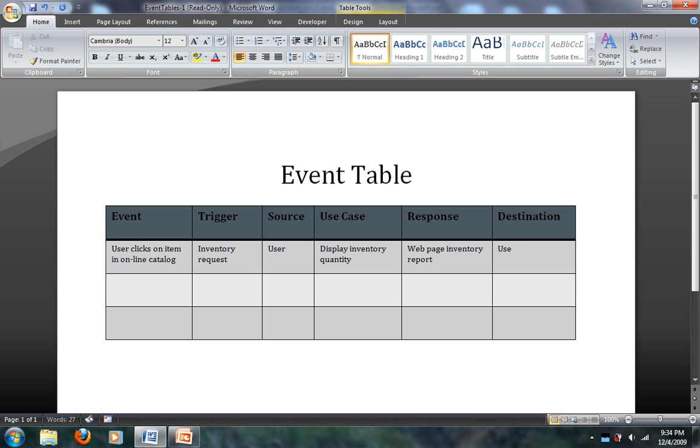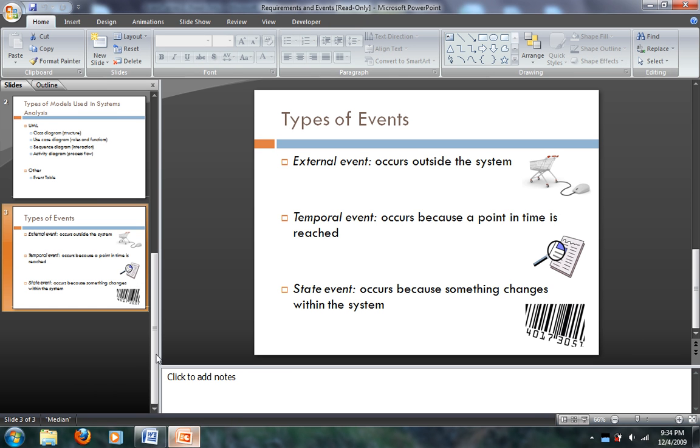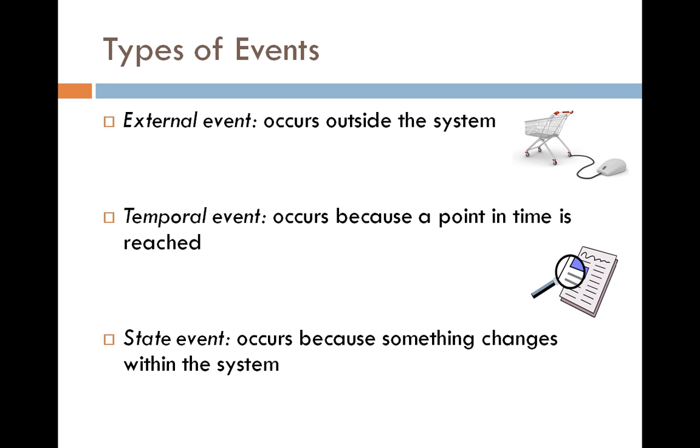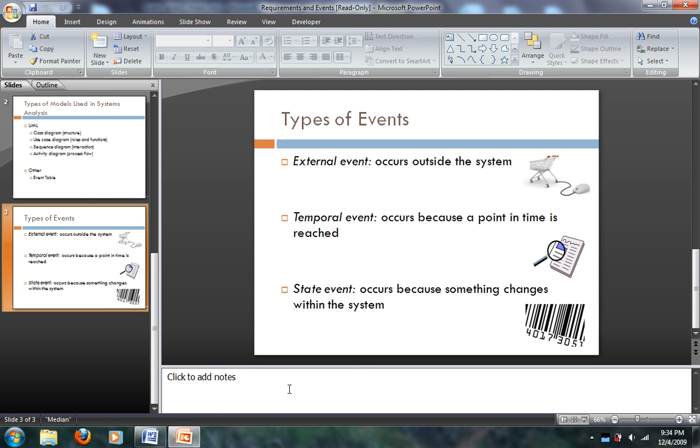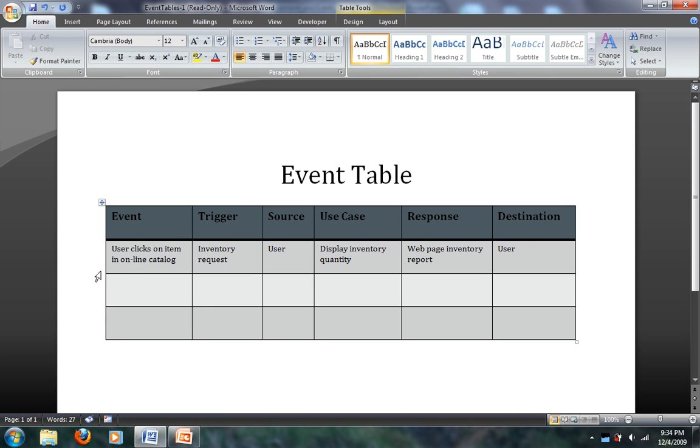Now let's go back to our table, and let's take a look at Temporal Events. Remember, Temporal Events occur because a point in time is reached. So, in the case of this retail store, where we're drawing upon these events, many times retail managers need sales reports to know how their inventory is being managed and how they can make strategic decisions to better help their business. So, let's create an event in our event table for this. What is the event? It's because a point in time is reached. So, time to produce monthly sales report.